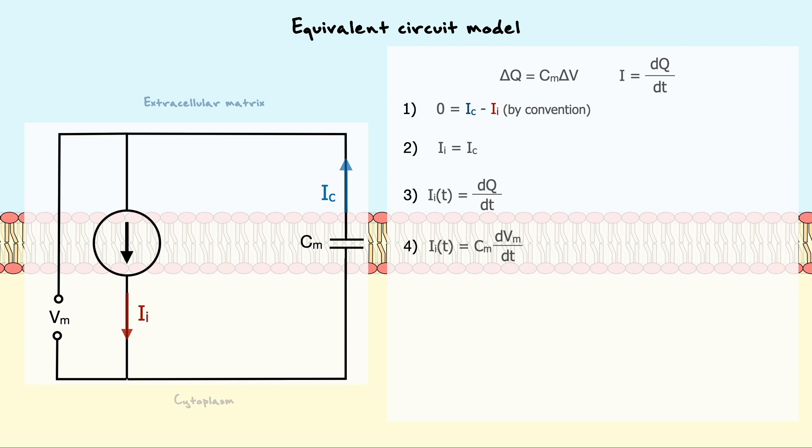Then we can replace dQ by its definition. We know that in our case, dVm is the membrane potential and since the membrane capacitance is a constant, we can take it out of the derivative. Now, we are left with a differential equation that we can easily solve, yielding this equation.